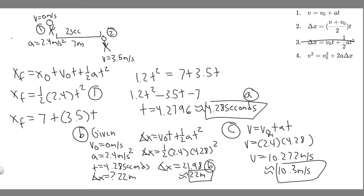To summarize: your answer to A was 4.28 seconds, your answer to B was 22 meters, and your answer to C was 10.3 meters per second. Hopefully you found this useful.